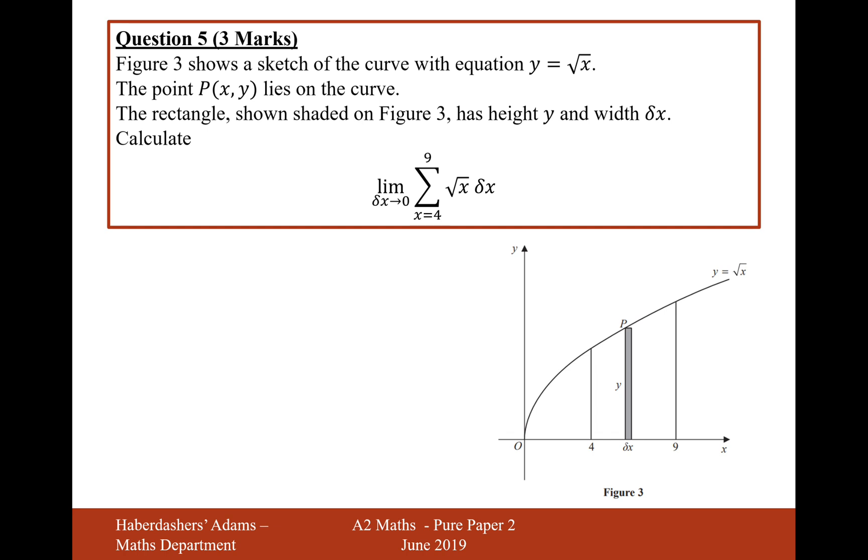The rectangle shown shaded in figure 3 has a height of y and a width of delta x. Calculate the limit as delta x tends towards 0 of x equals 4 to x equals 9 of root x times delta x.